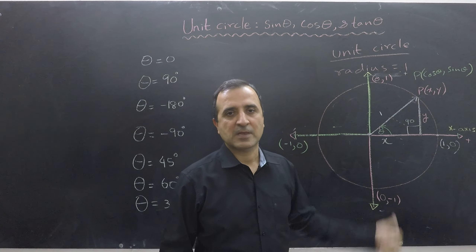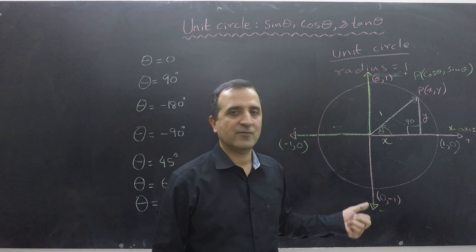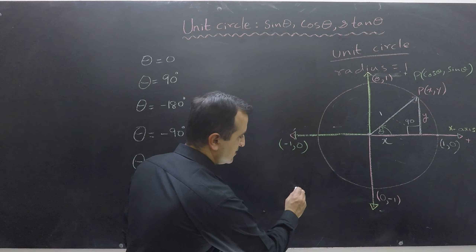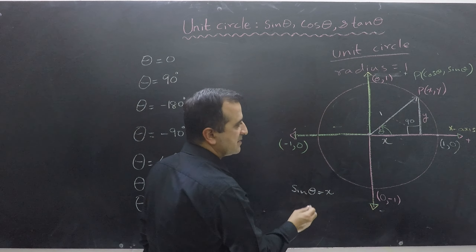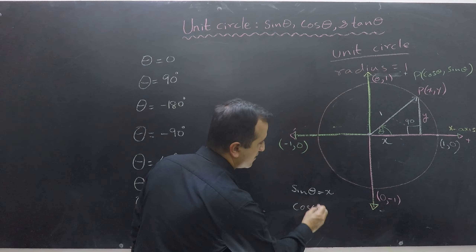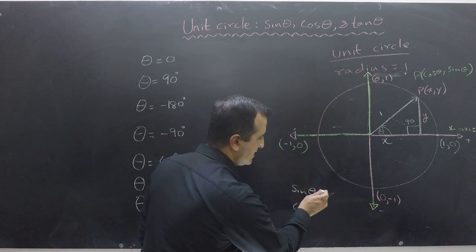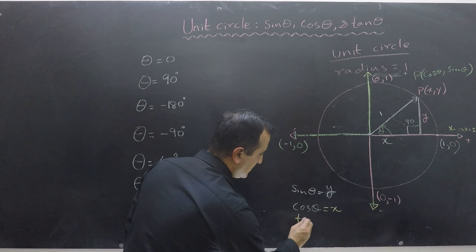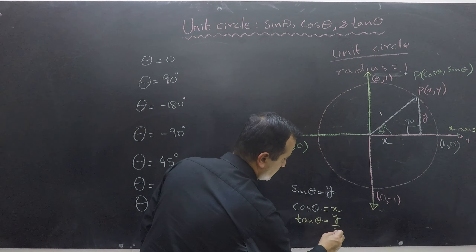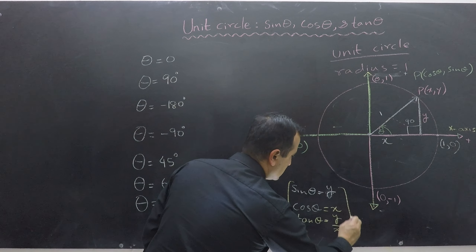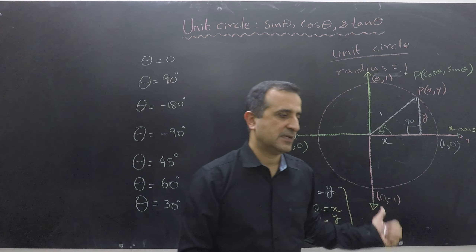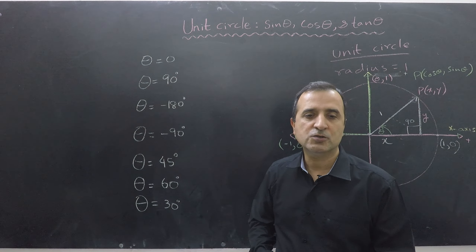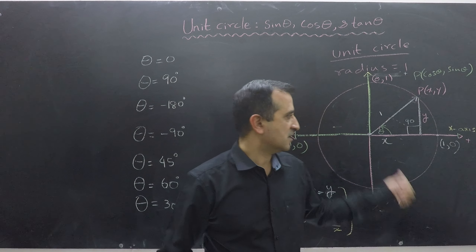So far we have learned what is the unit circle and what is the equation of sine theta and cos theta with it. With the unit circle we established that sine theta is y, cos theta is x, and tan theta is y over x. That was the conclusion of our discussion. Now we have to continue and find sine, cosine, and tan values for different angles without using any calculator — instead we will use the unit circle.